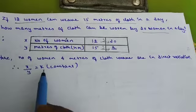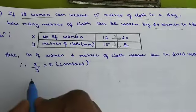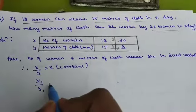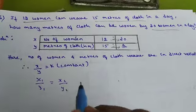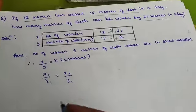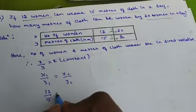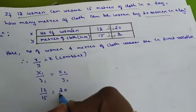Therefore x by y equals k, which is constant. Then x1 by y1 equals x2 by y2. Substitute their values: 12 by 15 equals 20 by A.